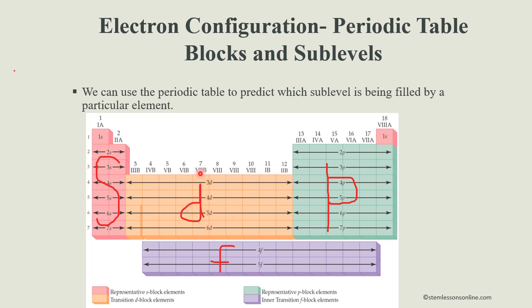When writing the electron configuration for D block elements, remember that the subshells are one less than the period number — that is, n minus 1. For example, if the period number is 4: 4S1, 4S2 for the S block, but when you jump into the D block, you write 3D1, 3D2, up to 3D10. Then again start with 4: 4P1, 4P2, up to 4P6. That is the key point to remember.